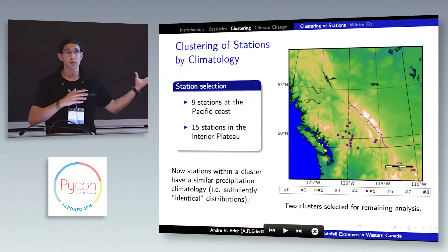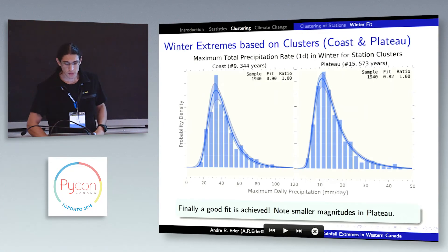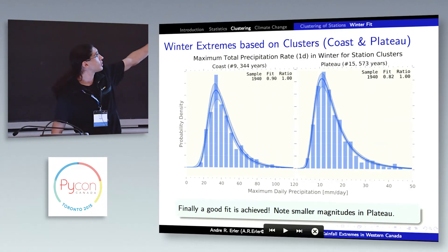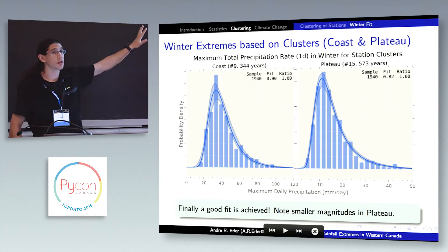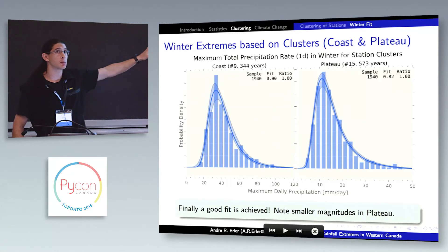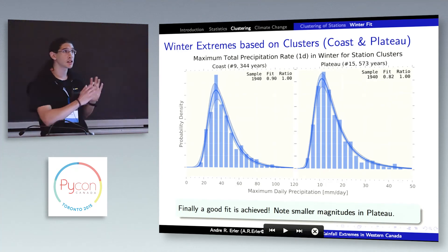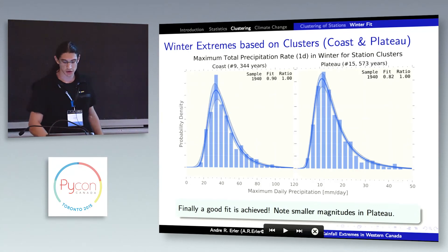You can do the same analysis as before, just based on these two clusters. This is now for winter precipitation for the coast cluster with nine stations, and for the interior plateau cluster with 15 stations. The fit is much better now. There is a bit more noise because we have less data, but there is no statistically significant deviation from the expected theoretical result — so this fits well, even in winter.